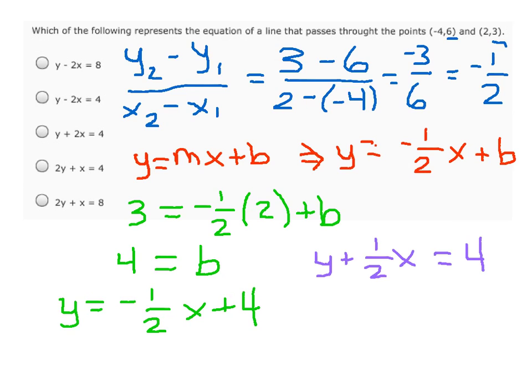Now we still notice that this isn't matching any of the answers. However, if we multiply each side by 2 to get rid of the fraction that is with the x, we're left with 2y, and then 2 times 1 half leaves us with 1, so plus x equals 8. So our final answer then is 2y plus x equals 8.